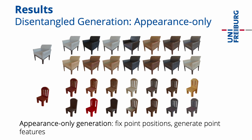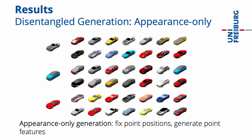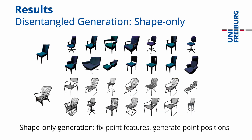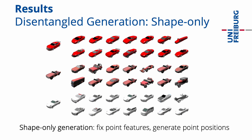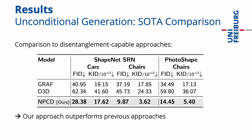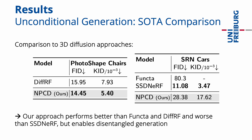This allows to regenerate the appearance of objects with a high diversity in quality. We can apply the disentangled generation procedure vice versa for high quality and diverse shape-only generation. Quantitatively, our approach outperforms previous disentanglement-capable approaches. Compared to 3D diffusion approaches, our approach performs better than Functa and Diff-RF and worse than SD-NeRF, but enables disentangled generation.